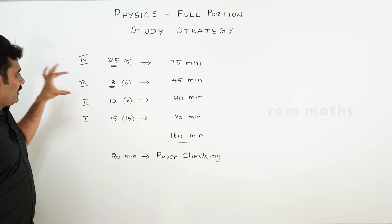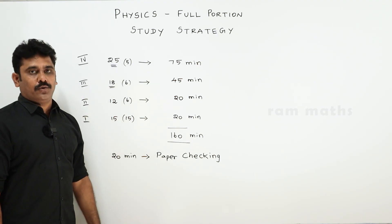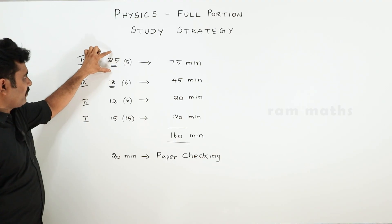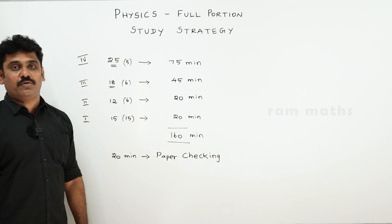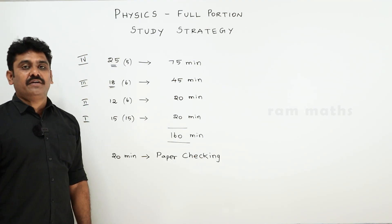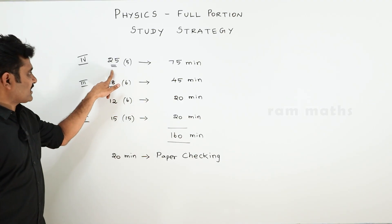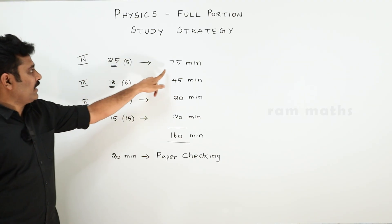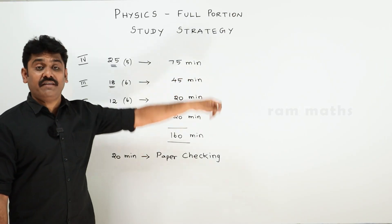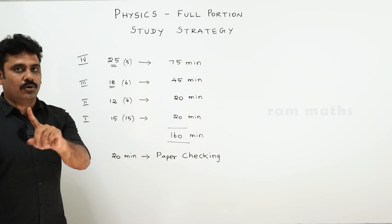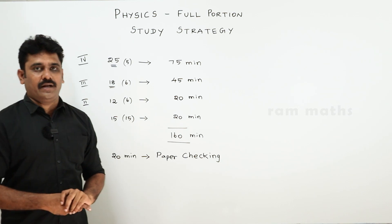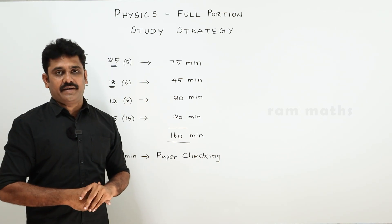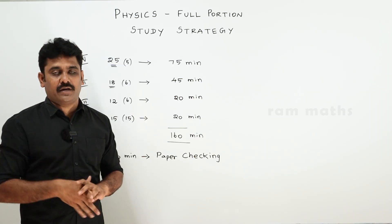If you look at the question pattern, we will see how much time to spend on each Roman numeral section. Roman letter 4 has the maximum weightage — 5 questions, 5 × 5 = 25 marks. You should allocate 75 minutes total to Part 4, spending about 15 minutes per question.